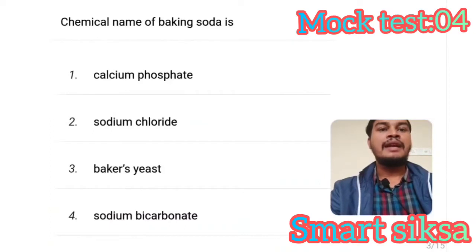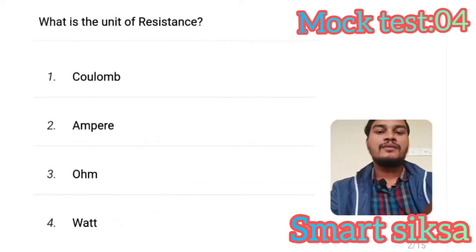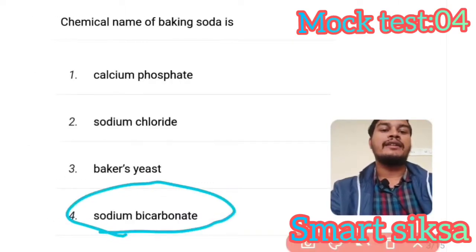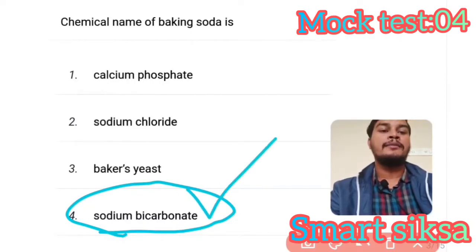Next question: What is the chemical name of baking soda? Answer is Sodium bicarbonate. Sodium bicarbonate is the chemical name of baking soda.